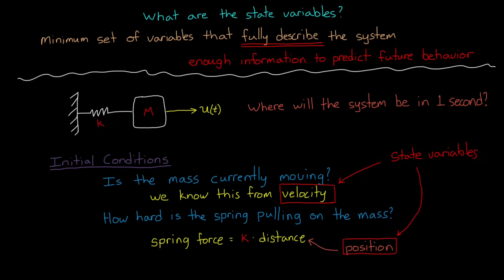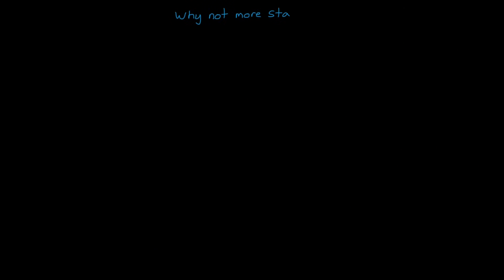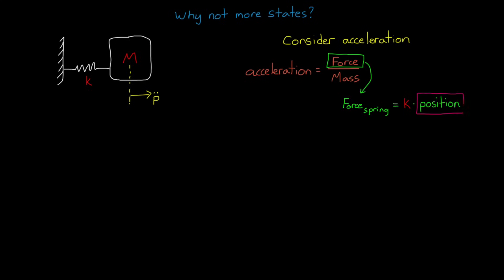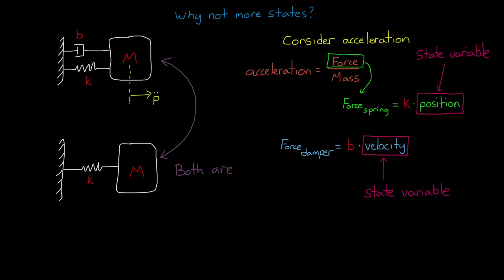So the minimum number of variables we need to fully describe this system is two, position and velocity. And since there are two, this is a second order system. So a natural question now might be why not more states? Why not three? Well, to answer that, let's consider acceleration. It's a variable since it's changing along with position and velocity. However, we don't need to know acceleration to fully describe the system. Acceleration is a result of force acting on a mass, and force in this case is a byproduct of the position of the mass. Therefore, we get acceleration through position, and adding acceleration to your list of state variables is just extra information. Now, something that might seem strange at first is that if we add a damper into the system, we're not increasing the order of the system, because we don't need any additional state variables to account for this additional element. The force from the damper is determined by the velocity of the mass, which we already have in our state variable list. So both of these systems have the same number of state variables, two.